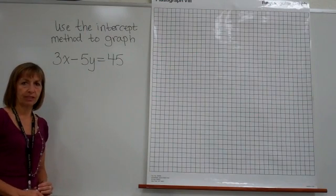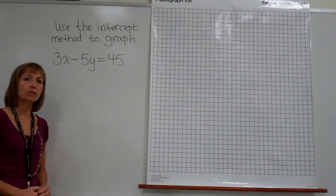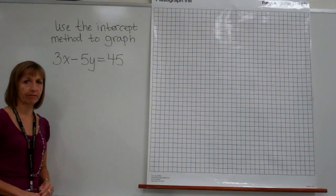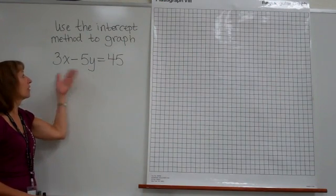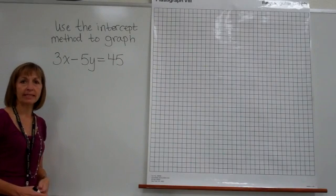Another way to graph a linear equation is using the intercept method of graphing. The equation I'd like to graph with this method is 3x minus 5y equals 45.